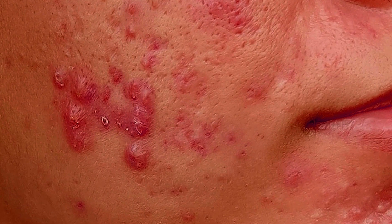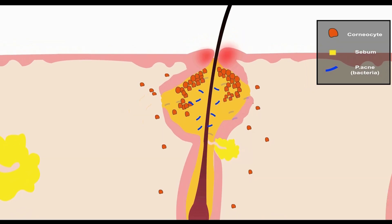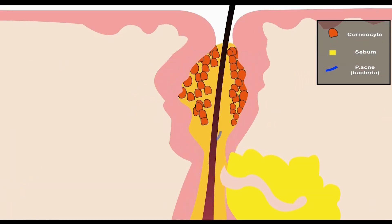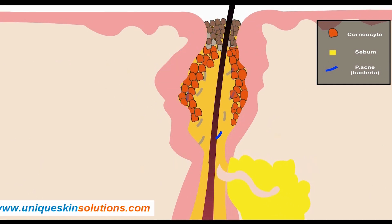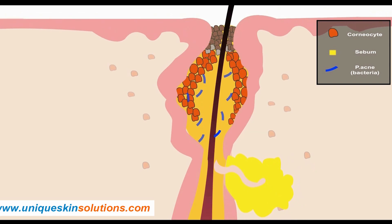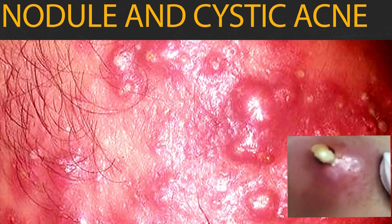Pustules are closed pimples where inflamed follicles become clogged with pus. In the comedown phase, bacterial overgrowth is less compared to papular/pustular acne. Nodular cystic acne is the most sinister form of acne, resulting from marked inflammation progressing from the papular/pustular acne stage.